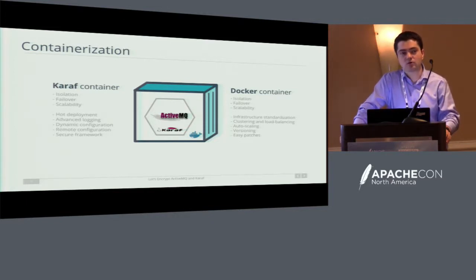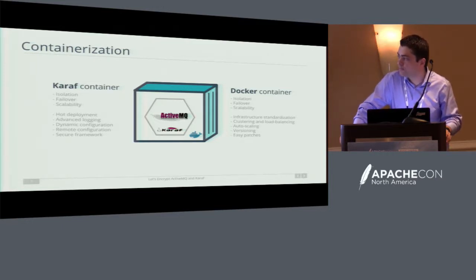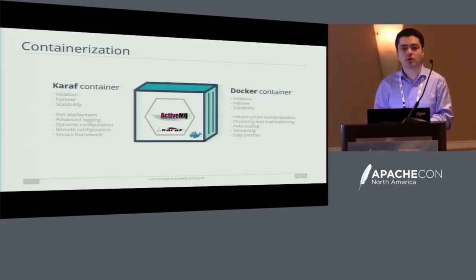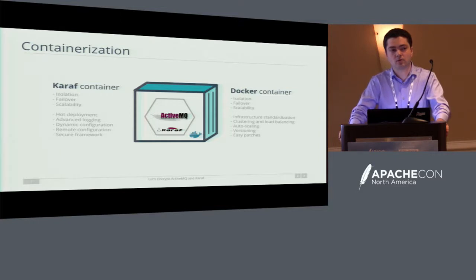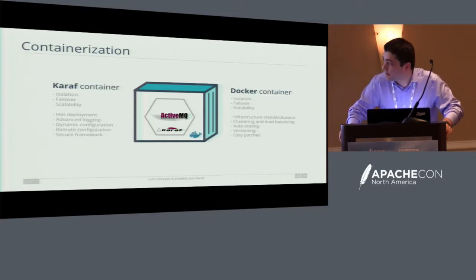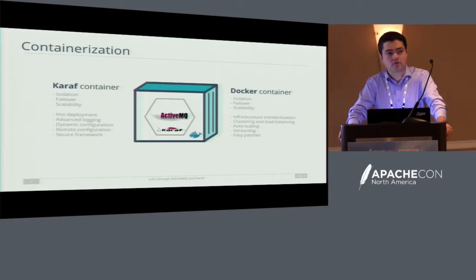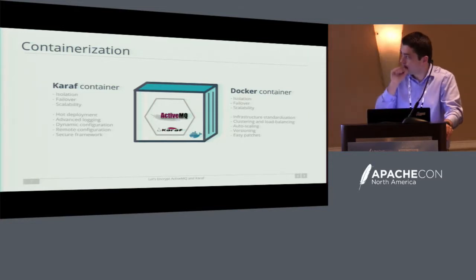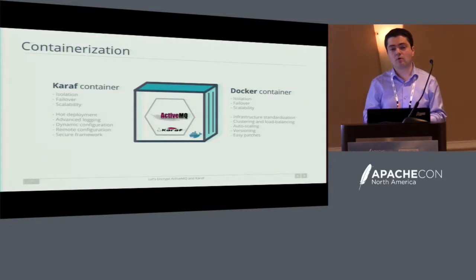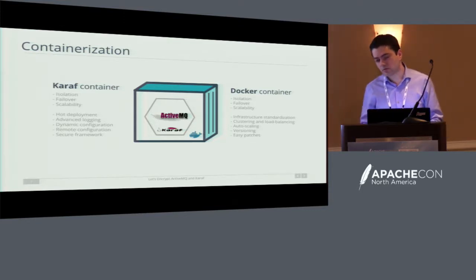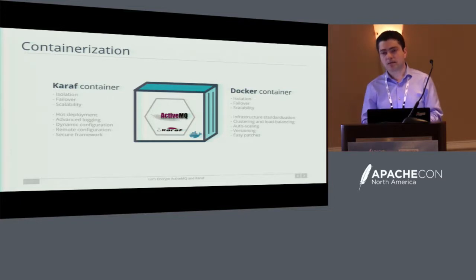Karaf also offers advanced logging with Decanter, which can integrate with Elasticsearch. The dynamic configuration can be changed remotely, either through SSH or through the XBIN URL. You have a secure framework through Jazz. Docker containers offer a different set of advantages — they are more related to standardization and bringing consistency to your infrastructure.